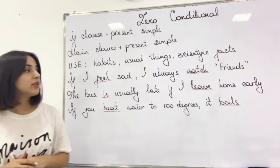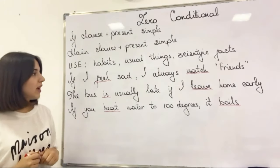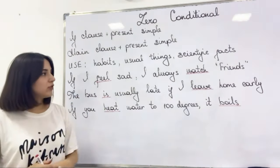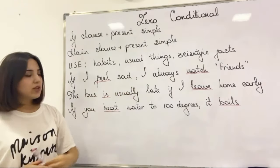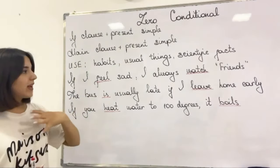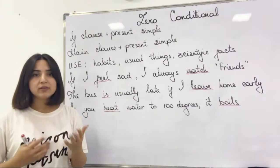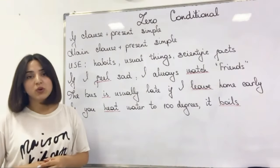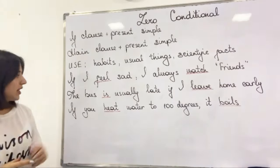Let's read them together. The first one: if I feel sad, I always watch Friends. I have underlined the words I have used in this sentence — feel and watch. They both are present simple verbs. And here I'm speaking about my habit. Whenever I feel sad, I watch Friends and it makes me feel better.